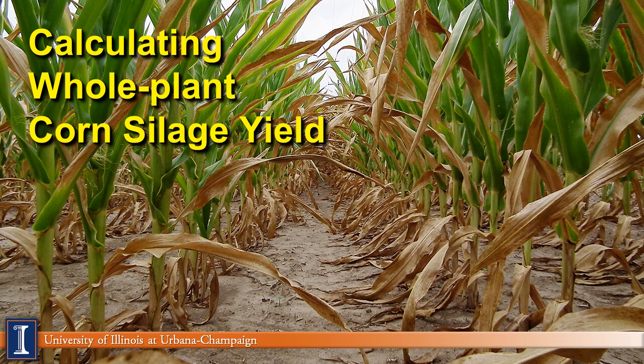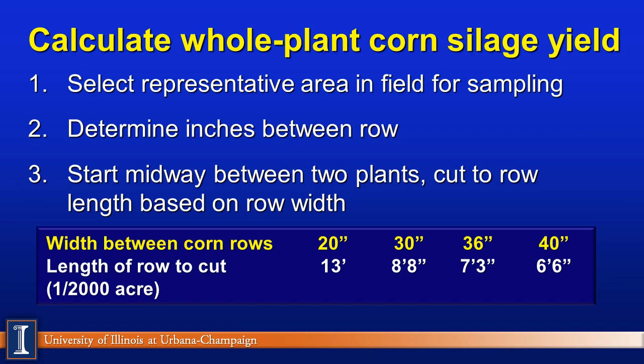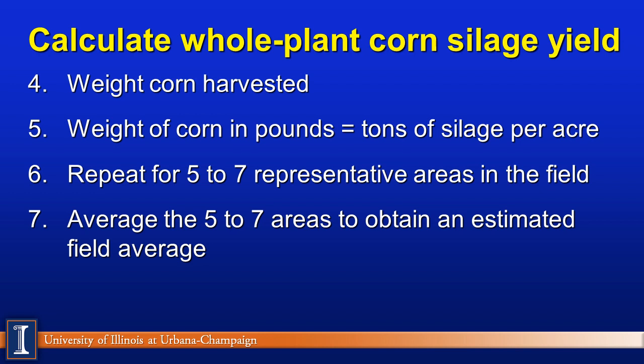Let's take a quick look at estimating whole plant corn silage yields to give us a barometer. Here is another way to calculate — much easier. You take a representative sample area in the field, determine inches between rows as we did before, and cut a length equal to 1/2000th of an acre. For 36-inch rows, you'll harvest 7 feet and 3 inches. Once you've chopped that length, you weigh that corn and convert it to tons per acre using the 2,000 constant. Repeat that for five to seven different spots in the field and you'll get an estimated field average — probably close to what insurance adjusters are going to do.